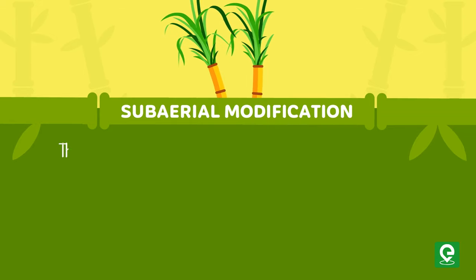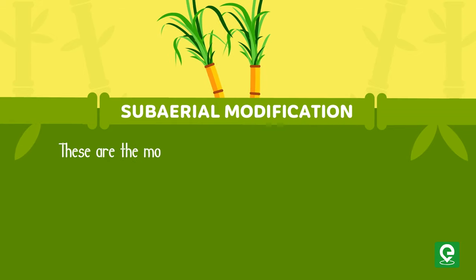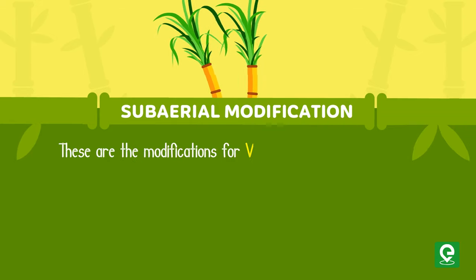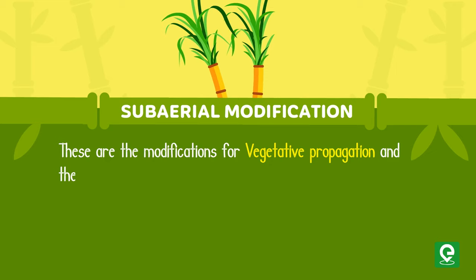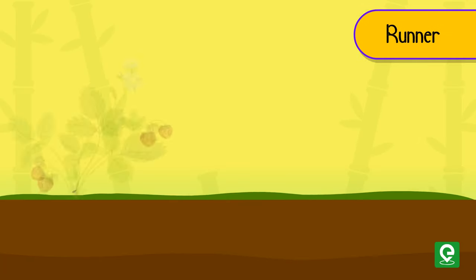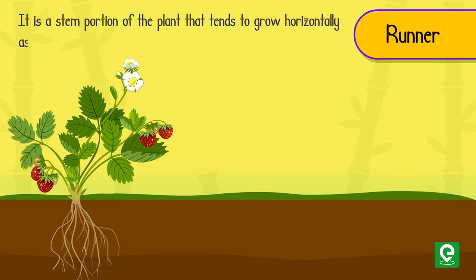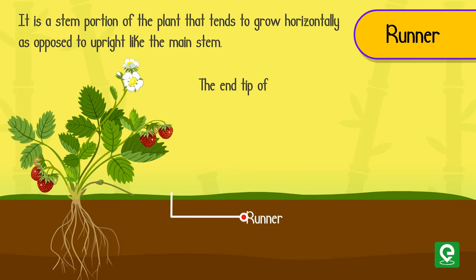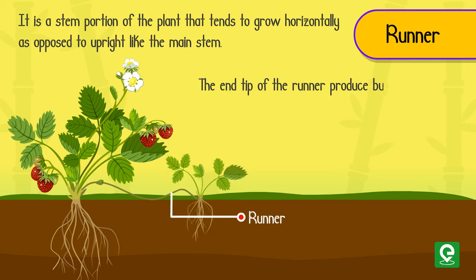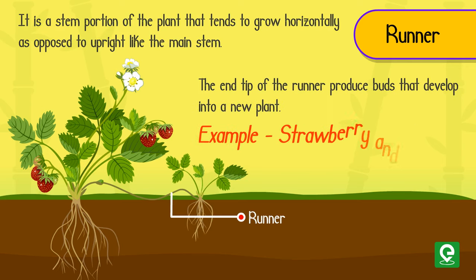Number two: sub-aerial modifications. These are modifications of the stem for vegetative propagation. Runner: it is a stem portion of the plant that tends to grow horizontally, as opposed to upright like the main stem. The end tip of the runner produces buds that develop into a new plant. Examples: strawberry and Oxalis.